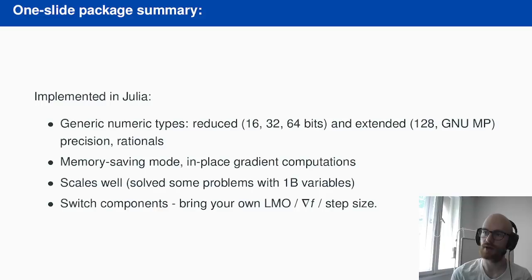FrankWolf.jl is implemented in Julia. We leverage the generic types, for example, to work on reduced precision, which was useful for some researchers working on other hardware systems, and also extended precision because some problems were numerically challenging, and having extended numerical precision helped a lot to first validate that our result was correct, like the floating point ones, and also to tackle some problems where we knew that we wouldn't get as good with standard floating point numbers. We have a memory saving mode and an out-of-place mode, with memory saving being the default to be able to avoid allocations at every iteration. We've observed on challenging problems that the package does scale well these days. We've tried it with problems with 1 billion variables, and it did work, it did converge to the solution. You can switch components. You can bring your own linear minimization oracle or gradient computation or step size.